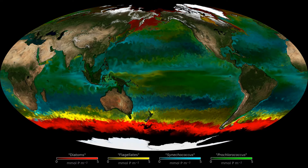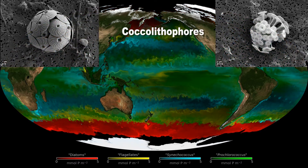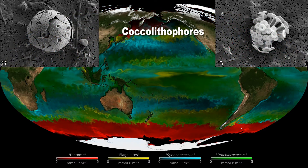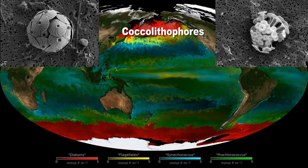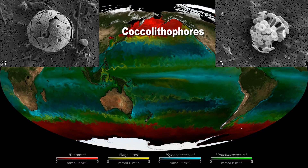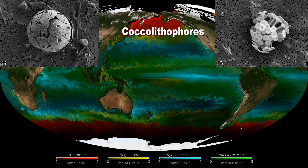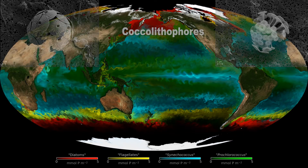Although not mapped here, coccolithophores are another kind of phytoplankton that we are interested in. Their shells are made of calcite, like chalk, which is very sensitive to the changing chemistry in the ocean.